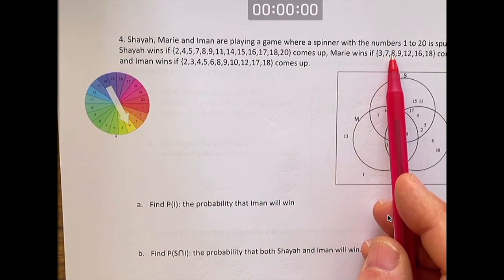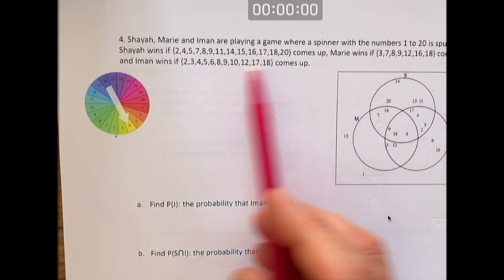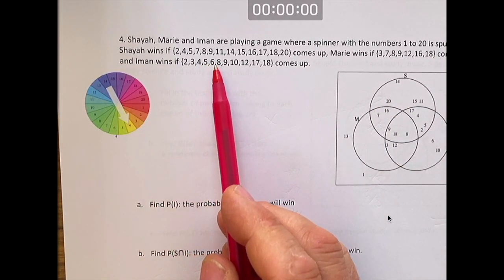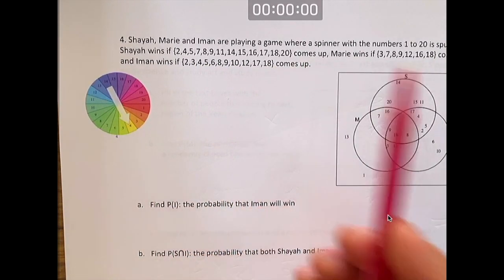Marie wins if 3, 7, 8, 9, 12, 16, 18 comes up. And Iman wins if 2, 3, 4, 5, 6, 8, 9, 10, 12, 17, 18 comes up.